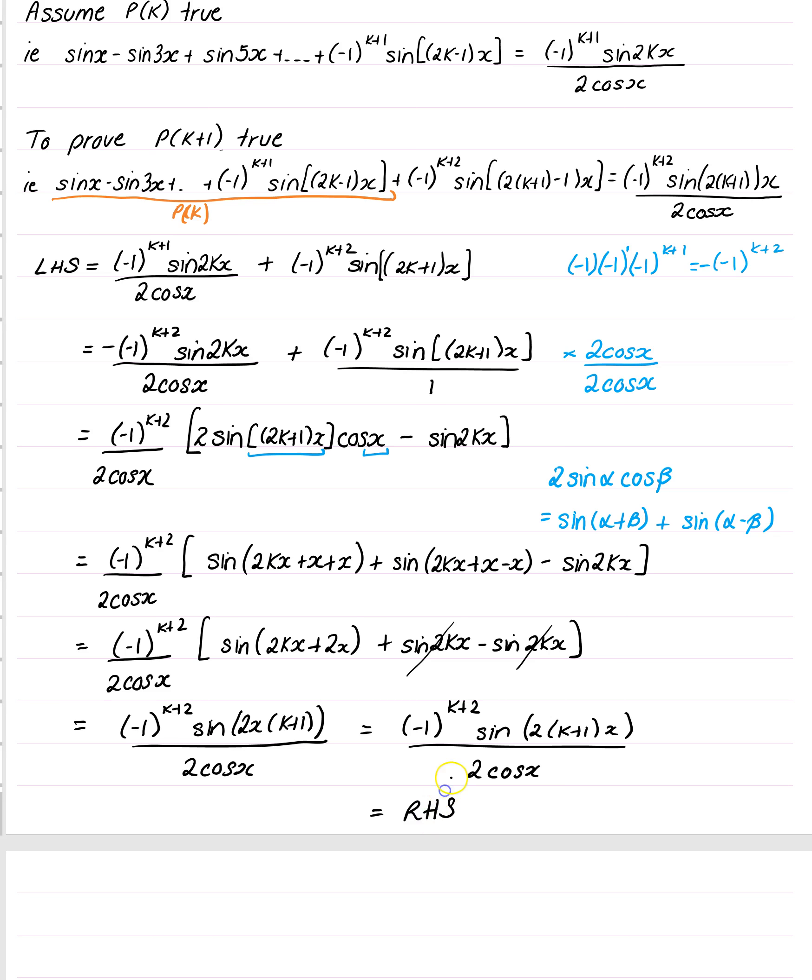So hopefully you were able to get that. It was just this formula that you needed to apply. And then you finish with the statement. Since P of 1 is true and P of k is true, by mathematical induction. Yeehaw!